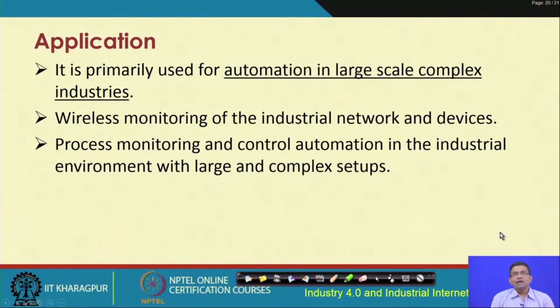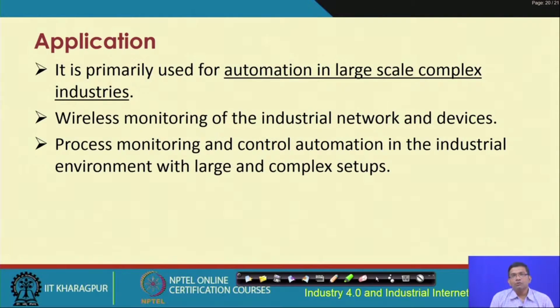Applications of ISA 100.11A include automation in large-scale complex industries, wireless monitoring of industrial networks and devices, and process monitoring and control automation in industrial environments with large and complex setups.